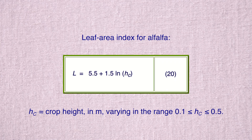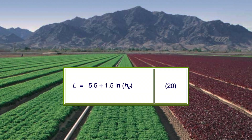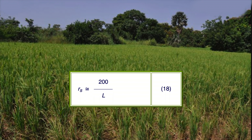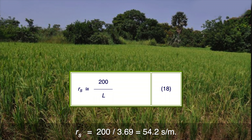The leaf area index for alfalfa is given by equation 20. From equation 20, for h sub C equal 0.3 meters, the leaf area index for alfalfa is L equal 3.69. From equation 18, the surface resistance for alfalfa is r sub S equal to 200 divided by 3.69, equal 54.2 seconds per meter.